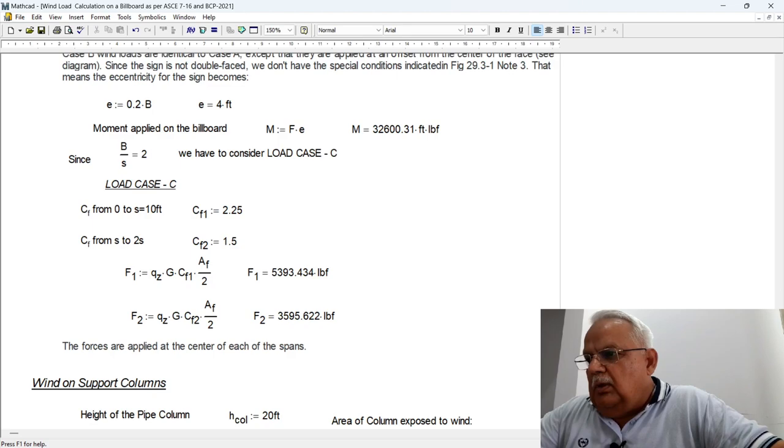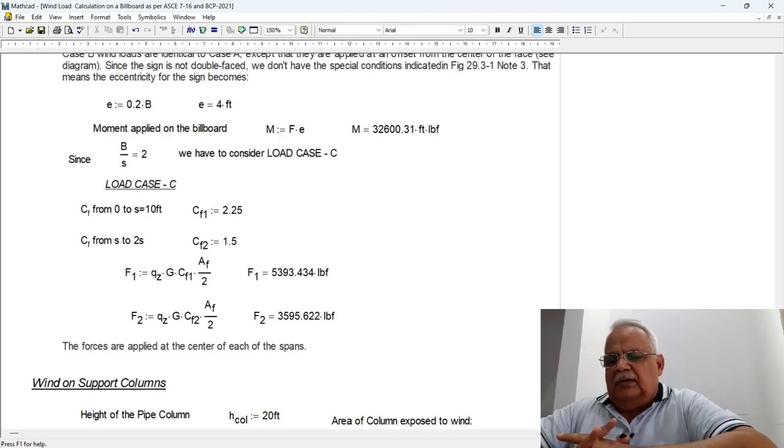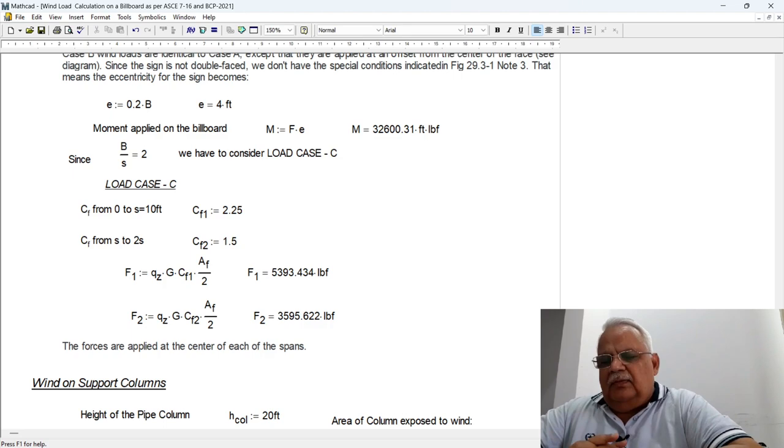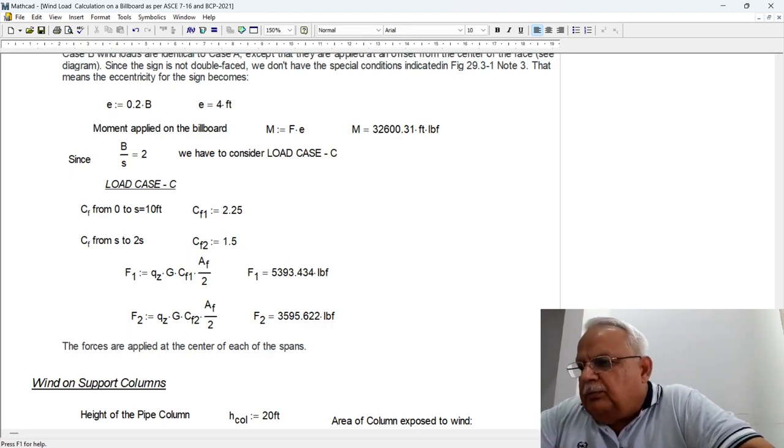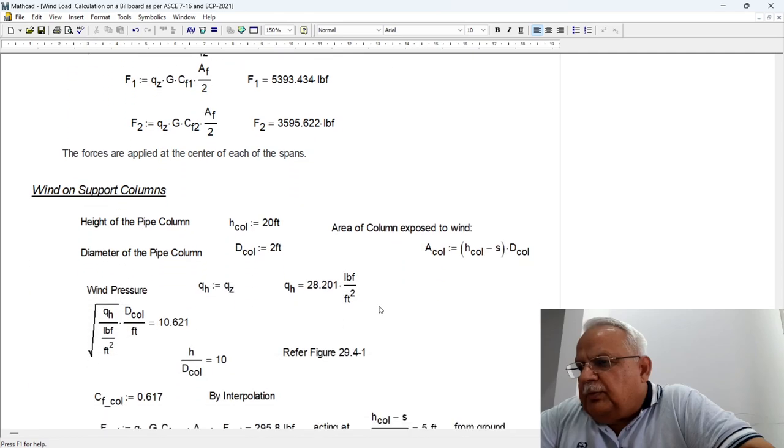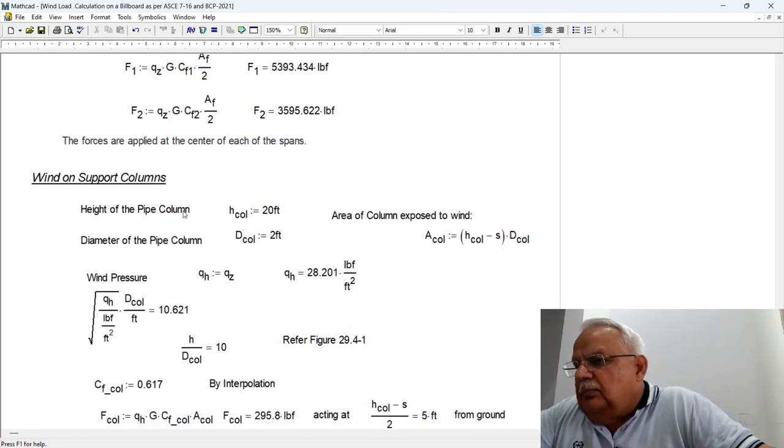So case A, case B, case C, these are the three cases for which we have to calculate the wind force on the billboard.